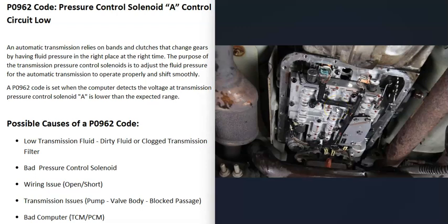Another thing that could cause this is some kind of internal transmission problem that's stopping that solenoid from working correctly. This could be something like a bad pump, a bad valve body, or a blocked passage going to control solenoid A where the fluid can't get through. If that's the case, you'll usually be getting a lot of other codes as well, so be sure to pay attention to that.